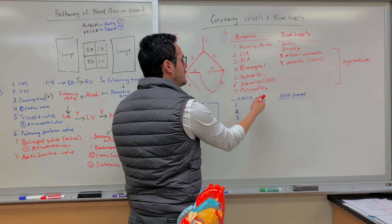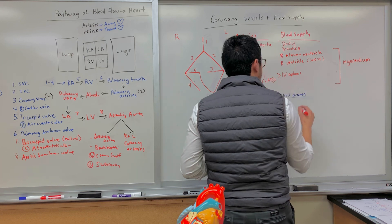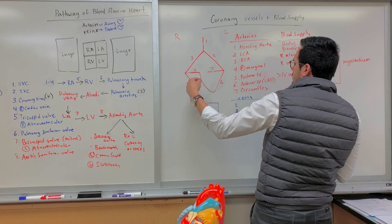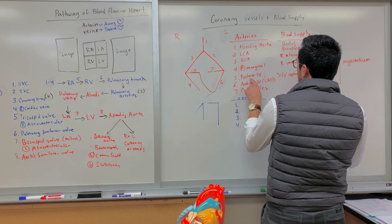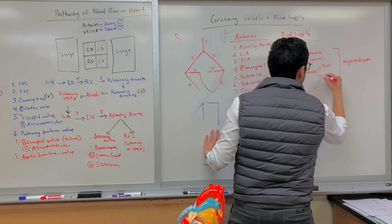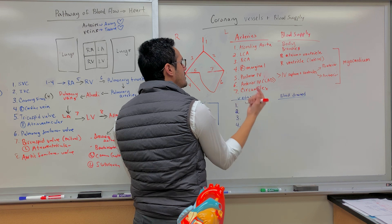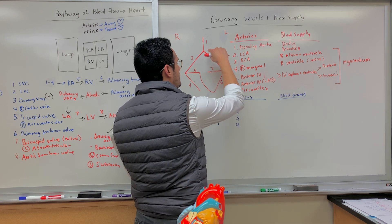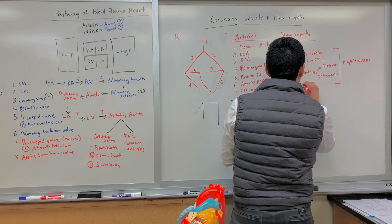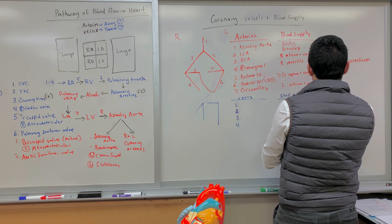Both the posterior and anterior interventricular arteries supply blood to the interventricular septum as well as the ventricles. The posterior interventricular supplies the posterior interventricular septum and ventricles on the back side, while the anterior interventricular supplies the anterior side. The circumflex branches from the left side and supplies blood to the left atrium and ventricles on the posterior side.